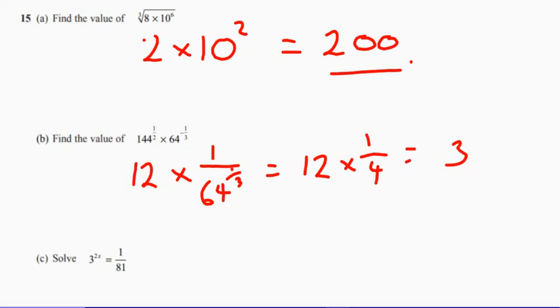Now part C, the key here is rewriting the second part, one over 81. I need to get a three. I need to have three as the base number because there's a three over here. So let's just rewrite this and then it just becomes so much easier.